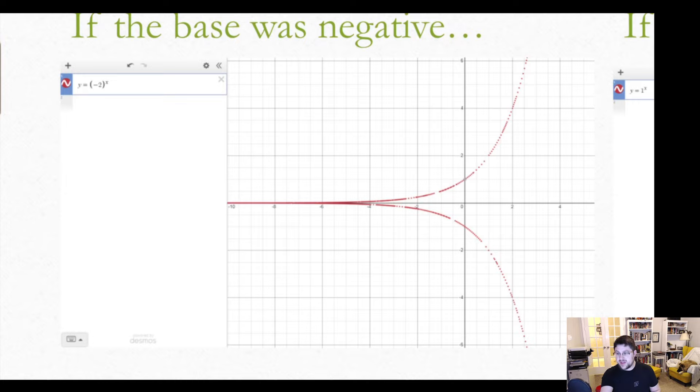Negative two to the third is negative. Negative two to the fifth is negative. So what we have is we have a negative number, then positive, then negative, then positive, then negative, positive, negative, positive. And so we don't have a consistent single line. We just have a whole bunch of points that are bouncing back and forth. That's not really a function. That's not something that we can actually use. So for the sake of argument, no negative bases.